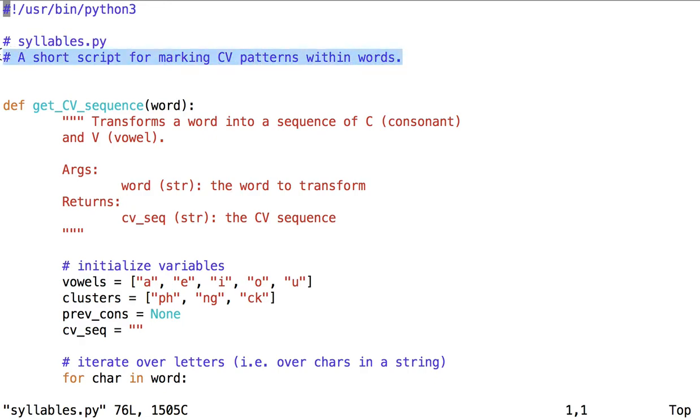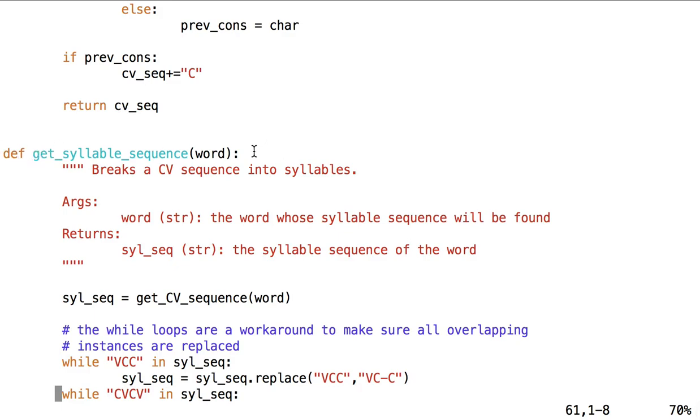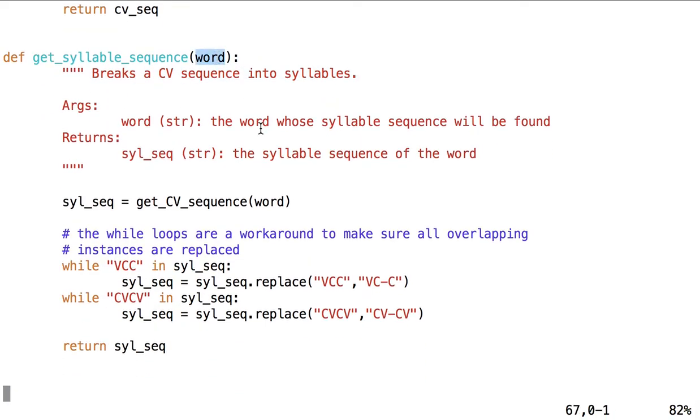You can see here we've documented that syllables.py is a short script for marking consonant-vowel patterns within words. It does so using a couple of functions. Get CV sequence, which takes a word as its argument. We have that information here in the doc string. We're to transform into a CV sequence, sequence of consonants and vowels. One other function used is the get syllable sequence, which breaks a CV sequence into syllables. This also takes a word as its argument.